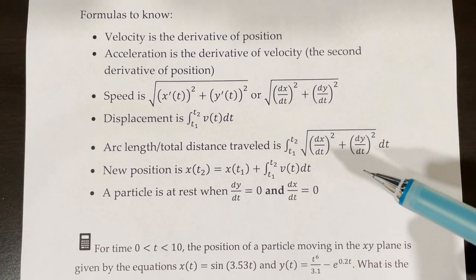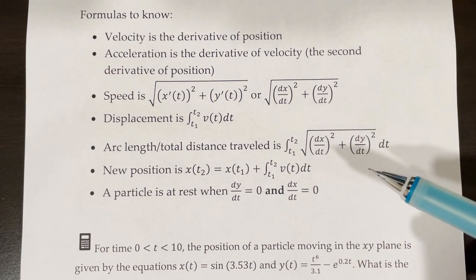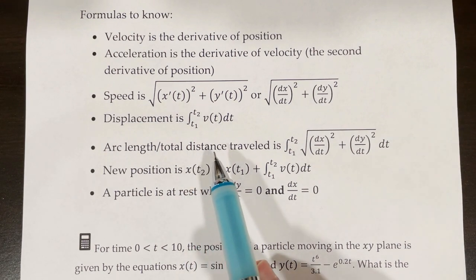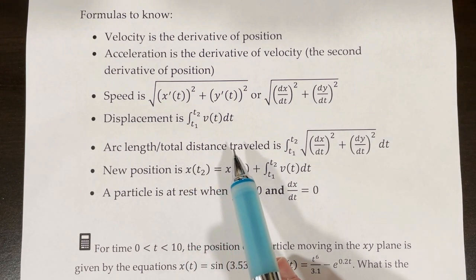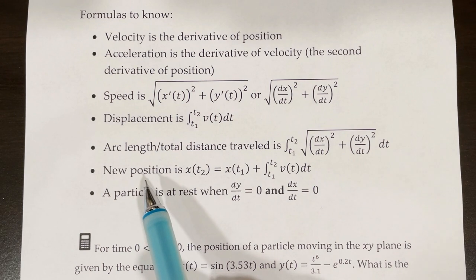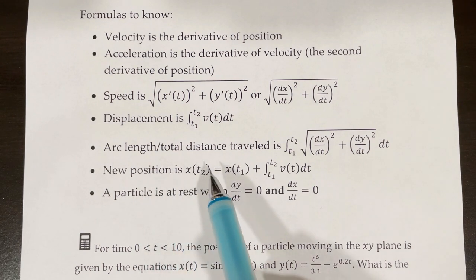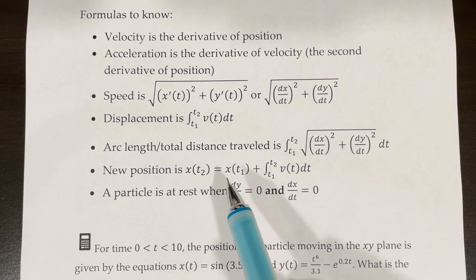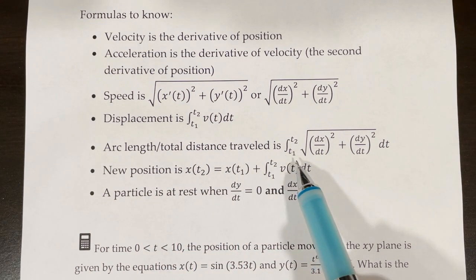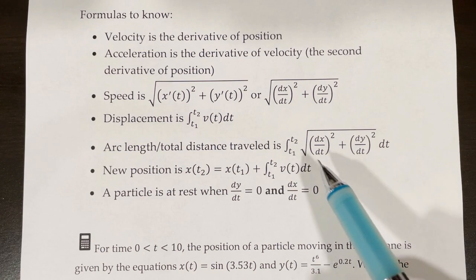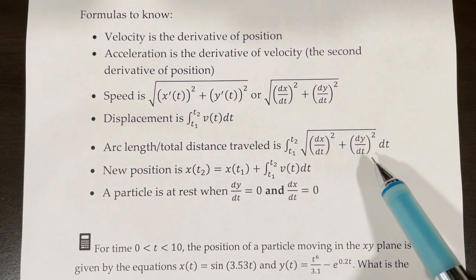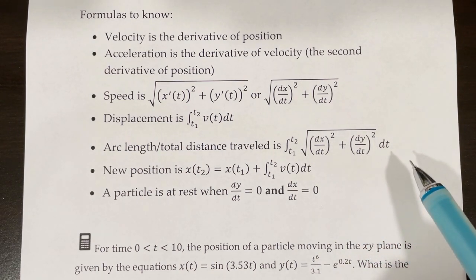Displacement from time 1 to time 2 is going to be represented by the integral from time 1 to time 2 of v of t, the velocity, dt. Arc length, which is often going to represent total distance traveled, is the integral from time 1 to time 2 of the square root of (dx/dt)² plus (dy/dt)² dt.